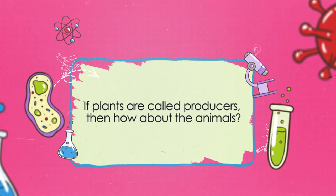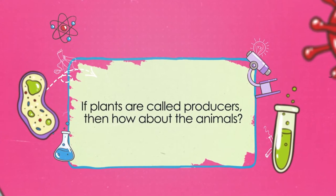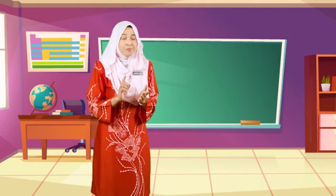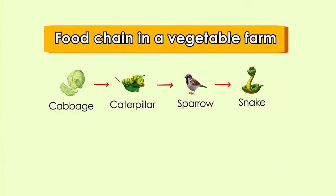If plants are called producers, then how about animals? Animals are the eaters, so they are called consumers. The first consumer feeds on plants. They are normally herbivores or omnivores, and are also known as primary consumers. Examples of primary consumers are caterpillars, grasshoppers, cows, and chickens.